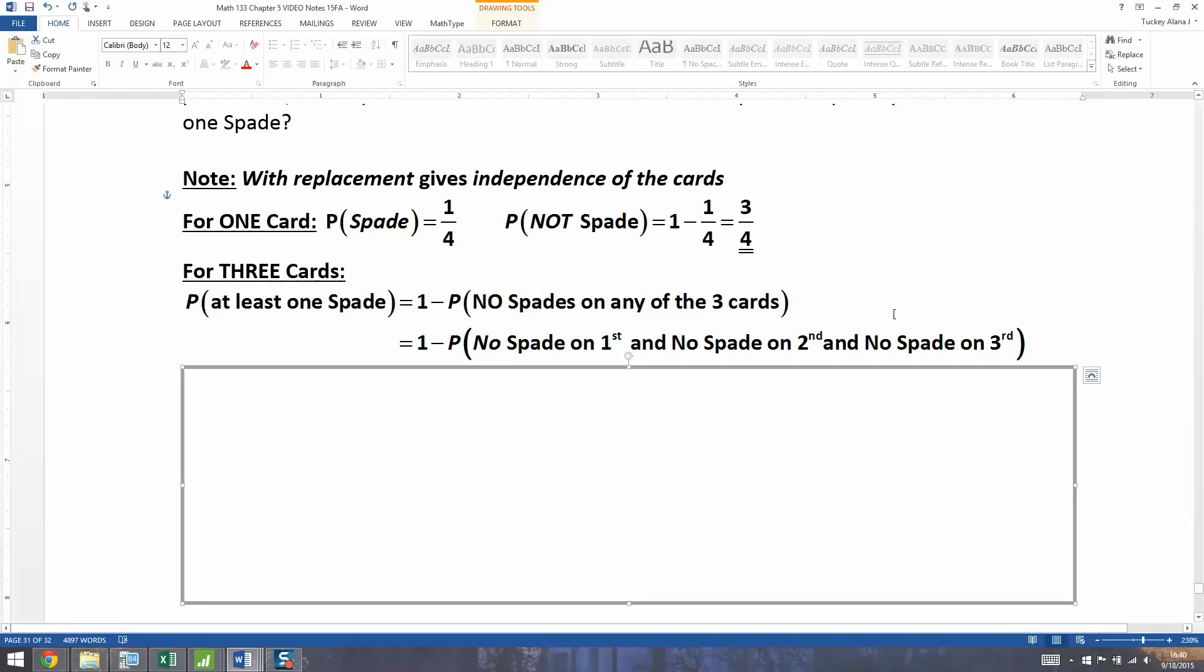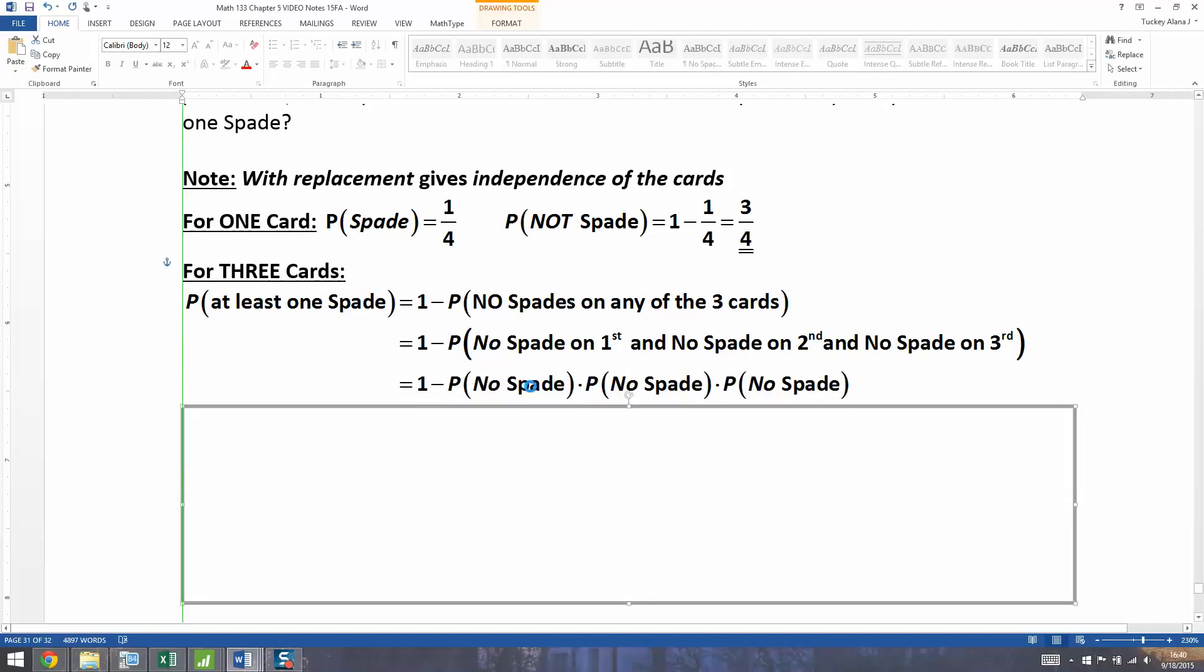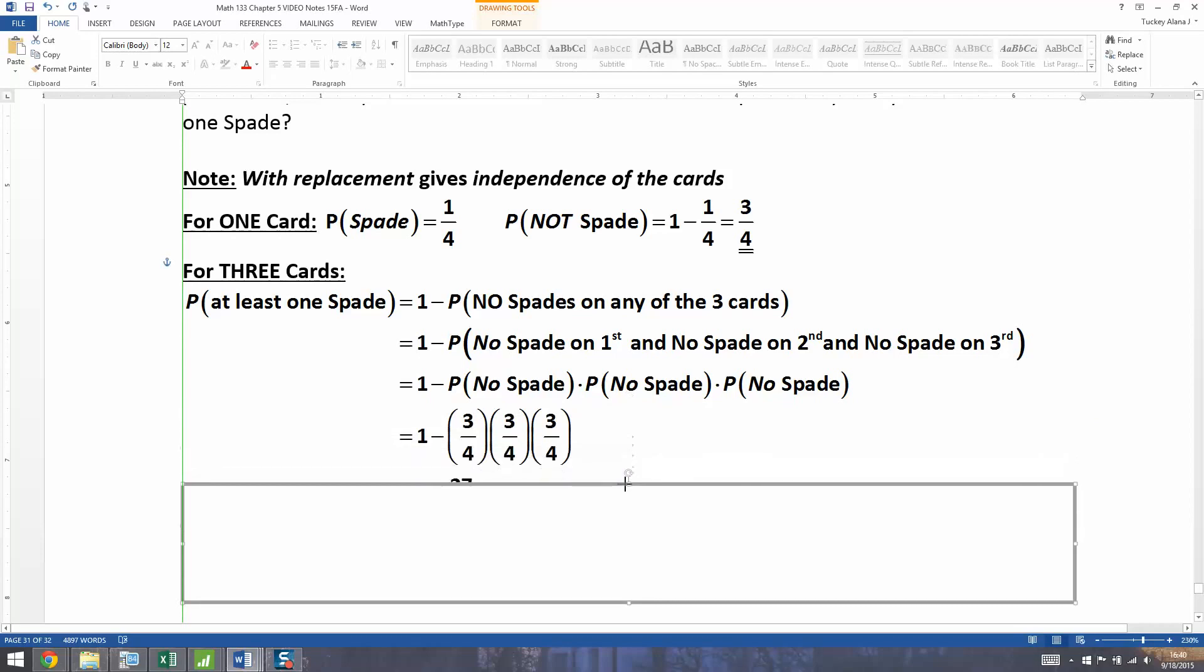All right, so I want no spade on the first. Well, that's three fourths. No spade on the second, that's another three fourths, and no spade on the third. So you're going to multiply the probability of no spade times itself three times, which means you're going to take three fourths times itself three times. Now three times three times three from our times tables, we know that is 27. And four times four times four is 64. Or you could use a calculator. So you'll find that it's one minus 27 over 64.